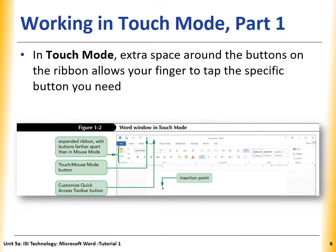Now we need to choose the Touch Mode. What is Touch Mode? It will give us extra space around the buttons on the Ribbon, allowing us to use our fingers to tap the specific button we need.